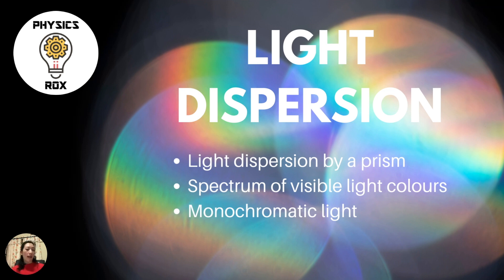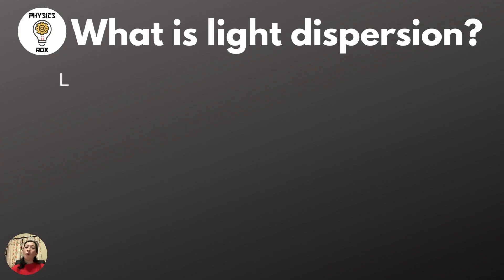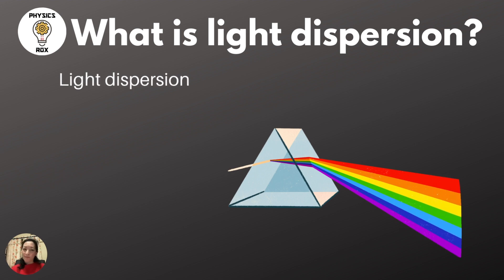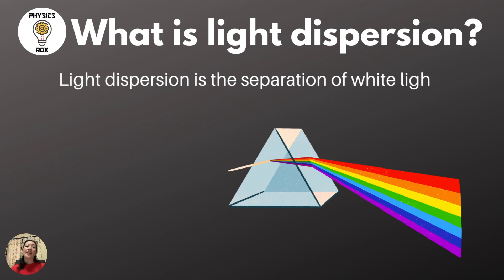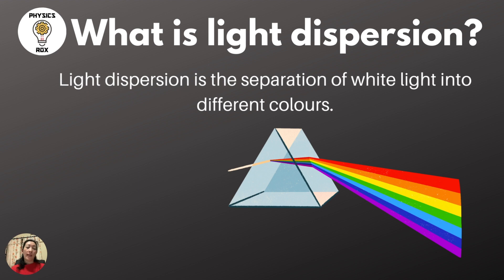First things first, what is light dispersion? Light dispersion is the separation of white light into different colours. This concept is commonly associated with the observation of how, when white light shines through a glass prism, it separates out into the rainbow colours.